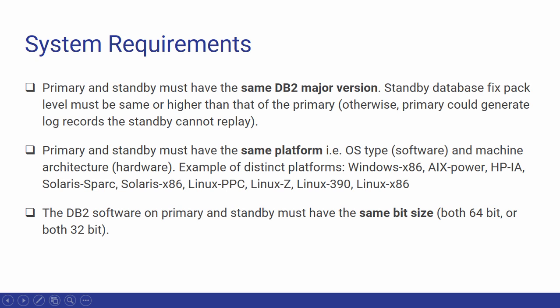The primary and the standby database must have the same DB2 major version. For example, you can have DB2-8, DB2-9, or DB2-10, 11 and so on on both the primary and standby. You cannot have DB2-9 and DB2-10 in combination for primary and standbys.